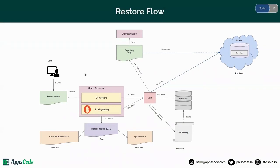This is our restore flow. The user creates a restore session containing the target application where the data will be restored. The Stash operator watches for restore sessions and when it finds one, it resolves the corresponding restore add-on — in this case MariaDB restore — and creates a restore job. The restore job gets the connection information from the app binding, gets the backend information from the repository, connects to the backend, downloads the data, inserts it into the database, and sends the metrics to the Stash operator.